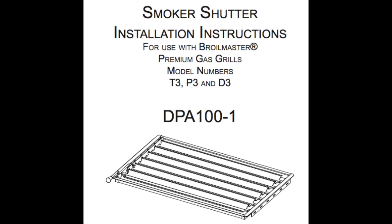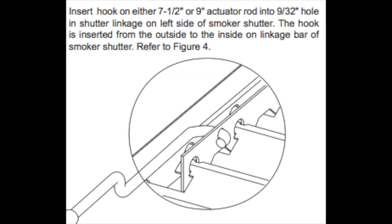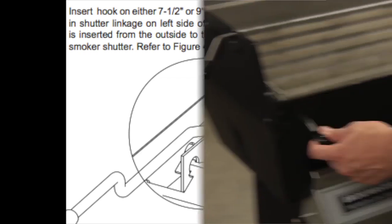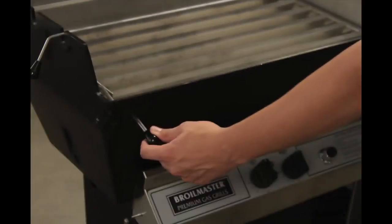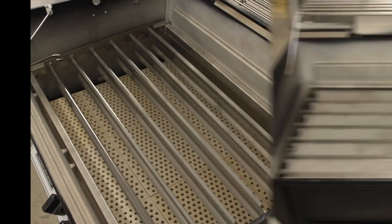If you have a smoker shutter, unscrew the knob from the threaded control rod. Tilt the smoker shutter frame up at the back and open the shutters slightly until you can slide the threaded control rod through the hole in the front of the grill. Screw the knob onto the rod and then open and close the shutters to make sure they operate smoothly.